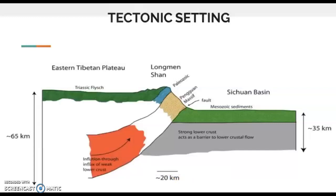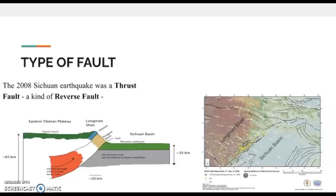It started when the Indian-Australian tectonic plates along the 155-mile-long Longmenshan Fault collided, creating a thrust fault in which the stresses produced by the northward moving Indian-Australian plate shifted a portion of the plateau of Tibet eastward, according to Britannica. A thrust fault is a kind of reverse fault.